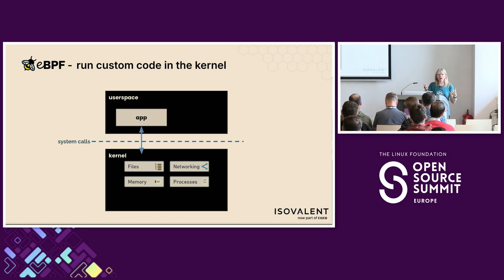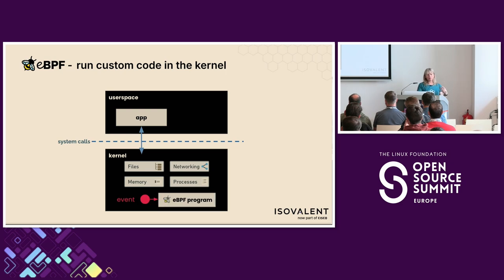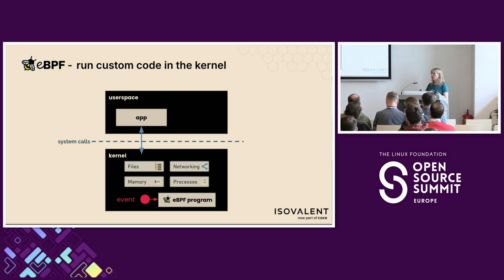In reality, the kernel is involved every time we do anything that touches hardware — accessing files, sending and receiving messages over a network, or allocating memory. Applications are typically written in a higher-level programming language that abstracts away the system calls. For example, if you open a file, there's going to be some variant of an open system call that asks the kernel to actually go and open that file.